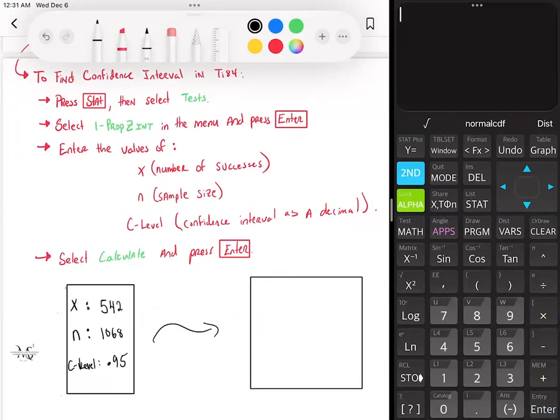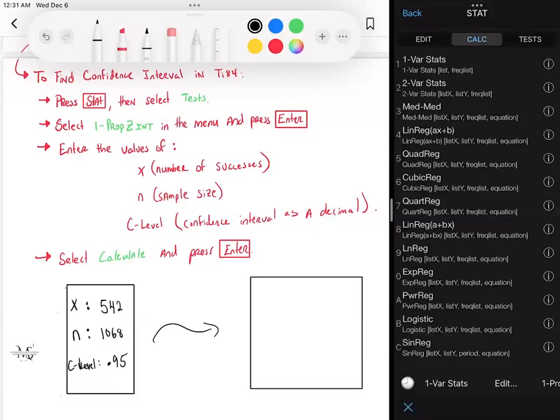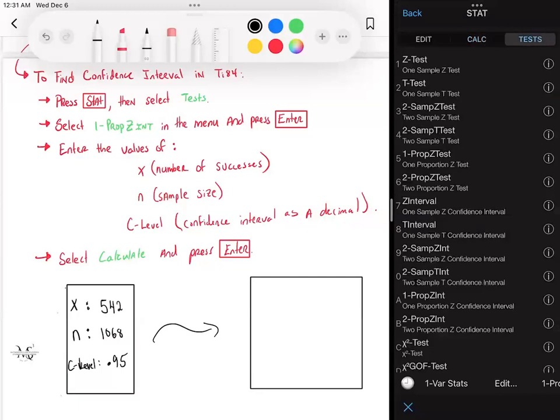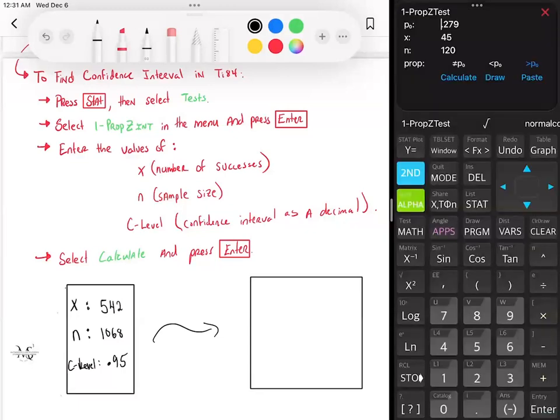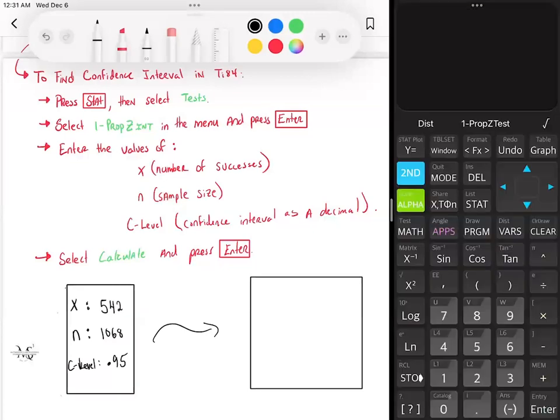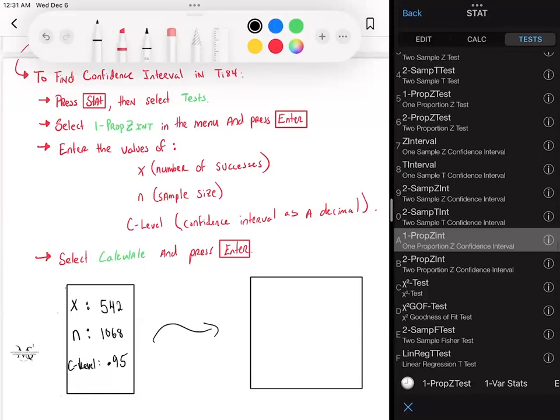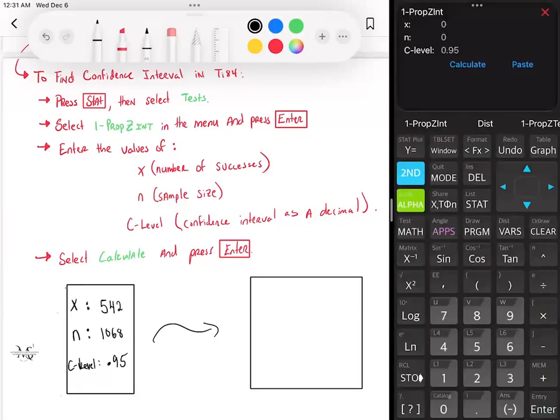So how do I do this again? First step, you press stat, select tests. Now from the test menu, you do one proportion Z interval, and then you enter your values. My apologies, the one that I just showed before, that was an error that's actually used for problem 8. So for now, we're doing one proportion Z interval, and you enter your values. So it's 542. You have N is 1068. And then C level is 0.95, that's their confidence level. It was 95%. So as a decimal, make sure you write it as a decimal, 0.95. You hit calculate.